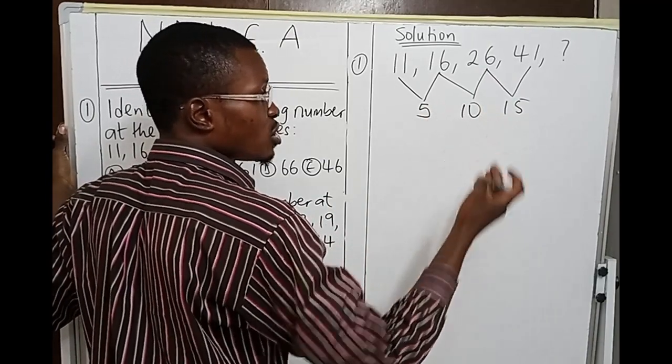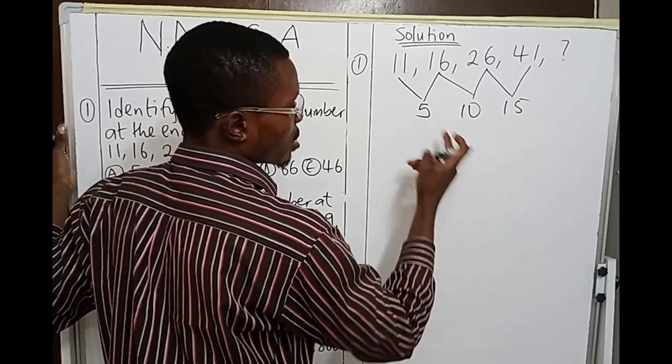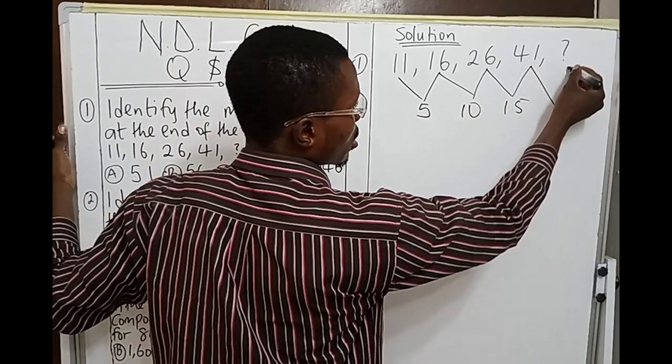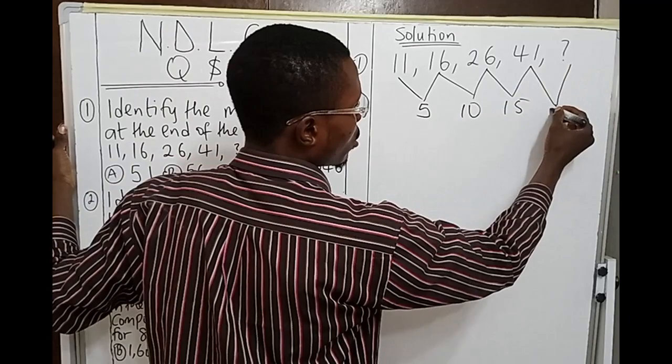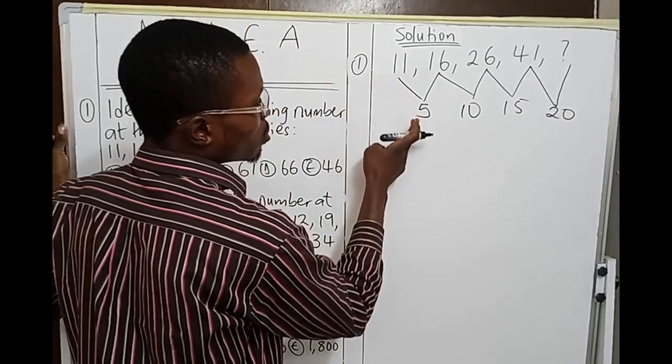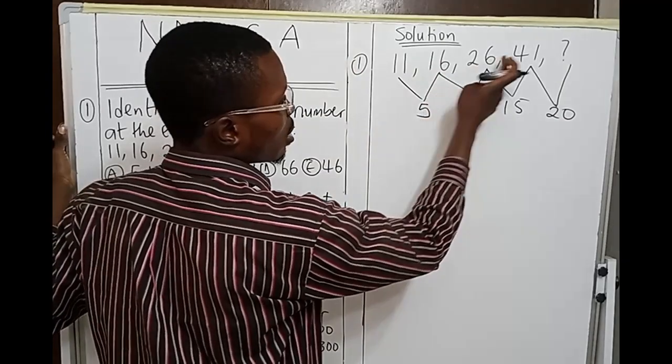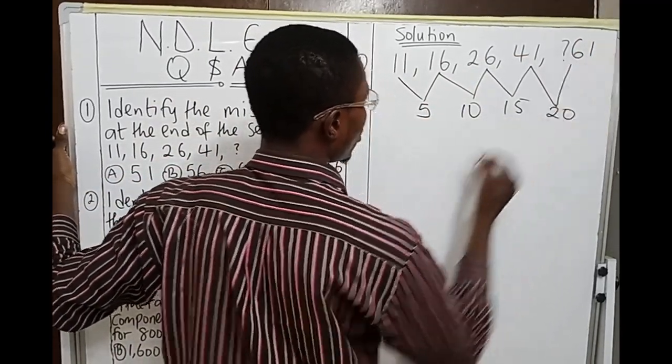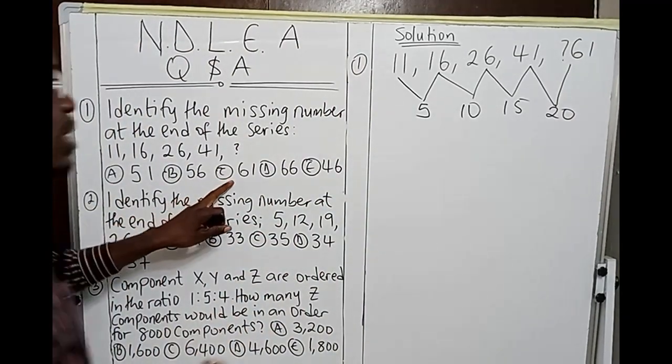It is following a particular counting order. We are counting in fives: 5, 10, 15. The next difference will be 20, and that will give us the next number. So 41 plus 20 will give us 61. So the missing number here in the series is 61, and that is given by option C.